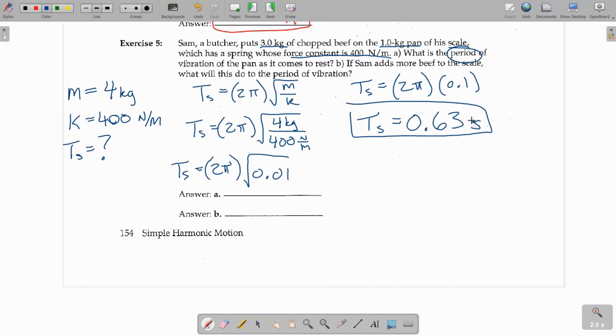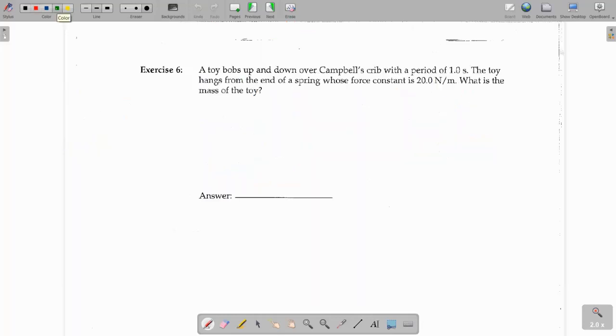Now, part B, it says if he adds more beef to the scale, what will this do to the period of vibration? So, let's think about that. If he adds more beef, that is going to increase the mass. And if you increase the mass, it's in the numerator there. So, ultimately, this number that comes out, this would be a larger number. This number would be larger. This number would be larger. And, therefore, the period would also be larger. So, it would increase the period of vibration. All right. Last problem here.